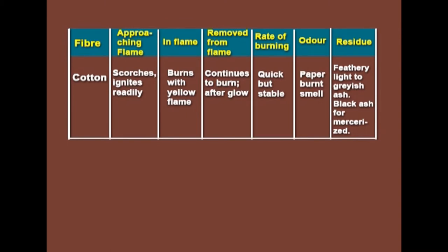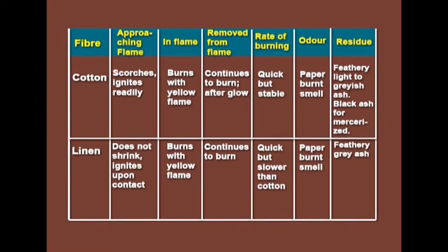Cotton is a cellulosic fiber taken from plants. When taken near the flame, it ignites readily and sometimes scorches. In the flame it takes up the flame readily and continues to burn after removing from the flame, giving an afterglow. The smell is that of burning paper, and the residue is feathery light gray ash — sometimes black ash if it is a mercerized fiber. Linen does not shrink but ignites upon contact and burns with a yellow flame, continuing to burn after removing. The rate of burning is quick but slower than cotton, and it also gives a paper-burnt smell with feathery gray ash.